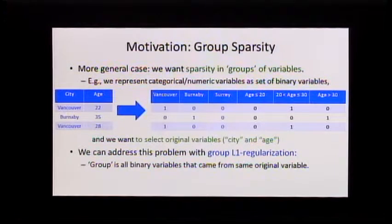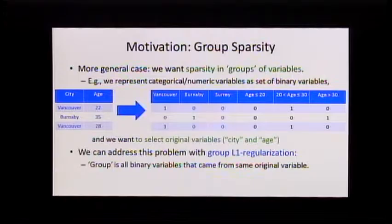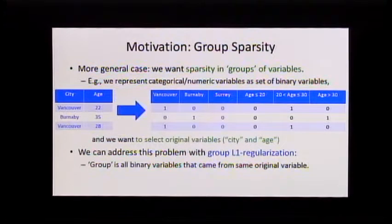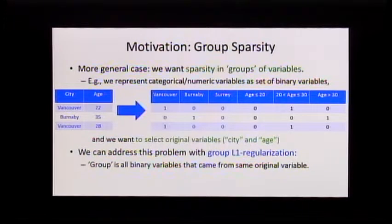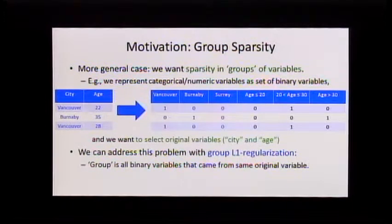The example I've used is: let's say our features are not actually real-valued or binary — they're actually categorical, like cities or ages. So we can't really put Vancouver as part of our X_i. Instead, you might create a bunch of binary variables — one representing Vancouver, which is 1 if the city equals Vancouver and 0 otherwise. You might do a similar thing for ages, where a variable is 1 if the age is between 20 and 30, and 0 if not.